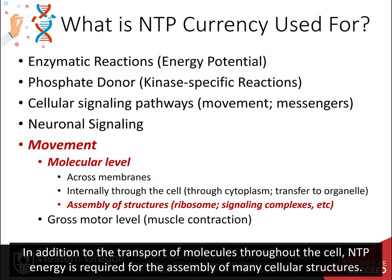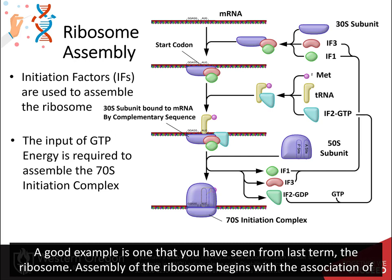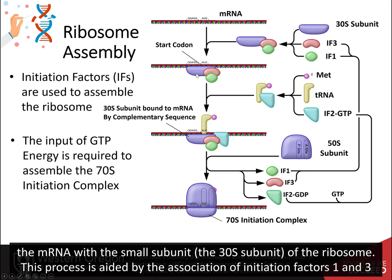In addition to the transport of molecules throughout the cell, NTP energy is required for the assembly of many cellular structures. A good example is one that you've seen from last term: the ribosome. Assembly of the ribosome begins with the association of the messenger RNA with the small subunit, the 30S subunit, of the ribosome.